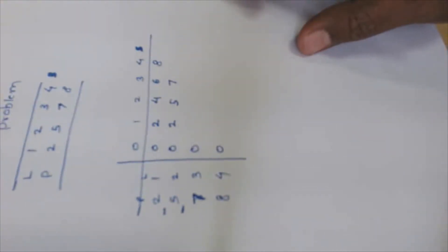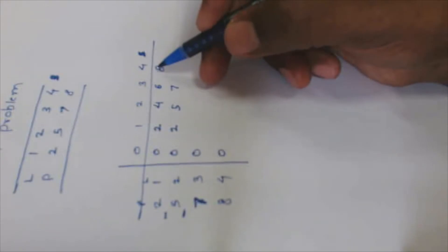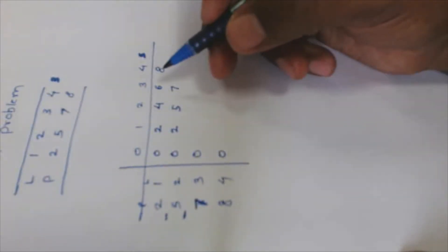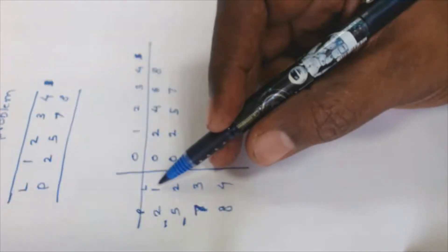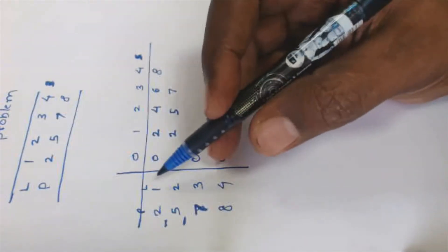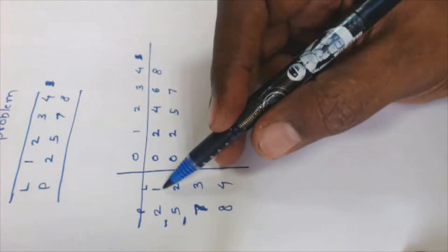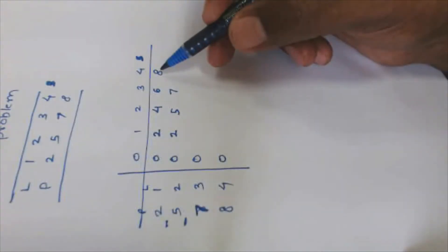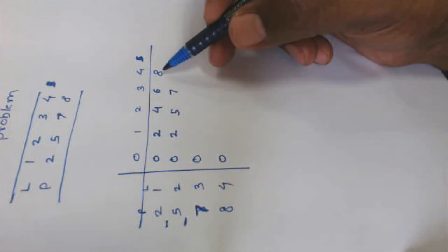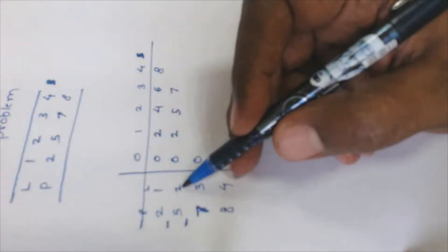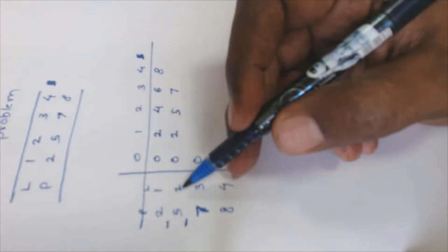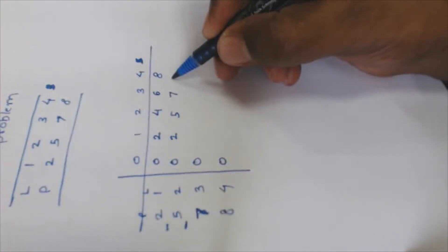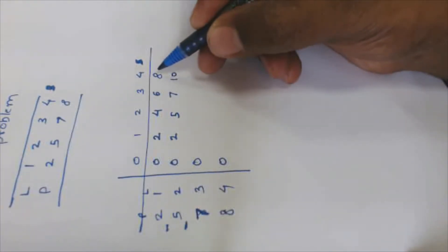For a rod of length four, we previously achieved a maximum profit of eight by cutting into four parts of length one. But with a second option available, we can cut into two parts of length two, achieving a maximum profit of ten. Ten is better than eight, so we go with ten.